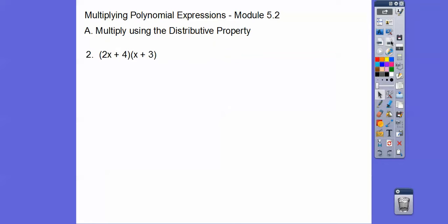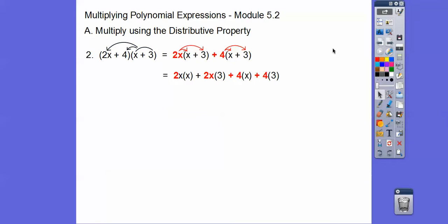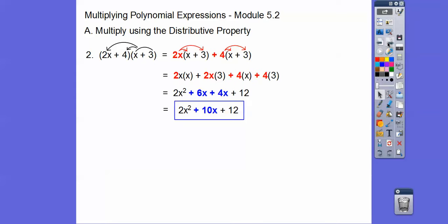Let's do that again. We're going to distribute x plus 3 through the parentheses — x plus 3 times the first term, and then x plus 3 times the second term. Now we'll take this 2x and distribute it through, and same with the 4. So 2x times x gives us 2x squared, 2x times 3, then 4 times x and 4 times 3. Clean that up, combine like terms, and we get that.